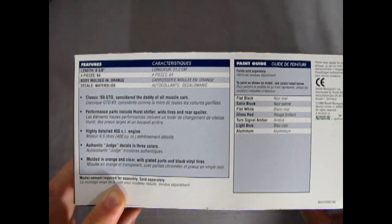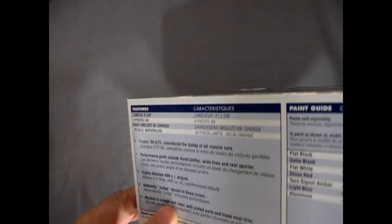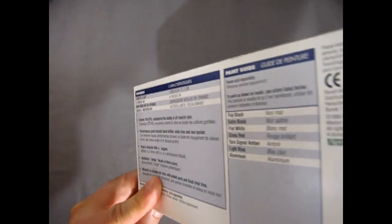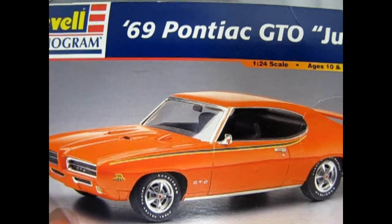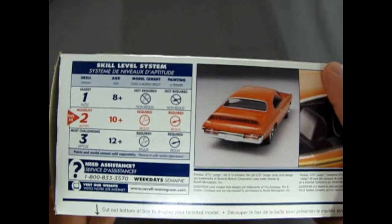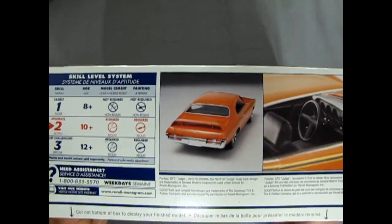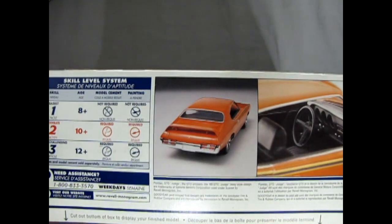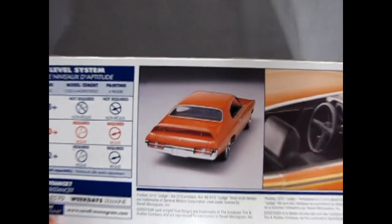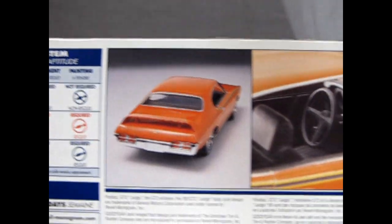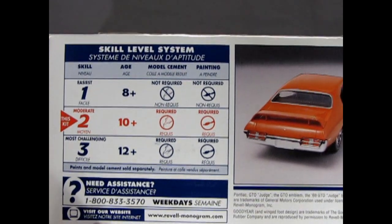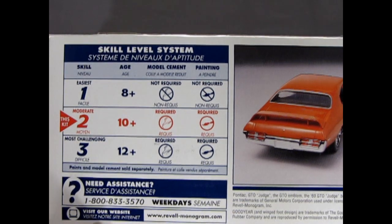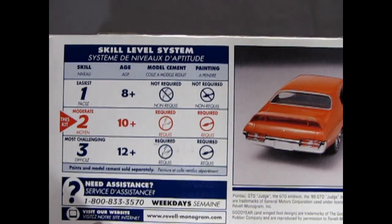Now I might have taken the decals out and put them to the side back in the day, and then we got the high river flood and I lost my entire decal box, which is unfortunate. I had some stuff in there from Denmark. Anyway, the end of the box. Like the front, there's the back end of the built-up 69 Pontiac GTO and our interior. This kit is for ages 10 and up, skill level 2. Needs glue and paint.